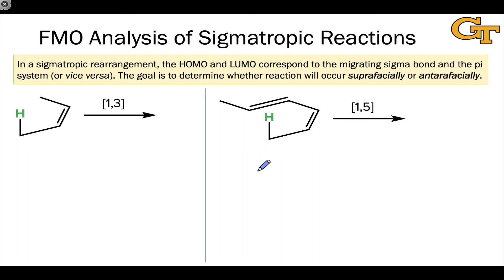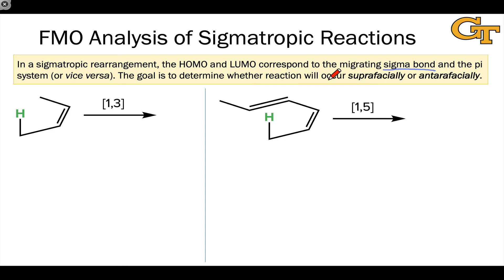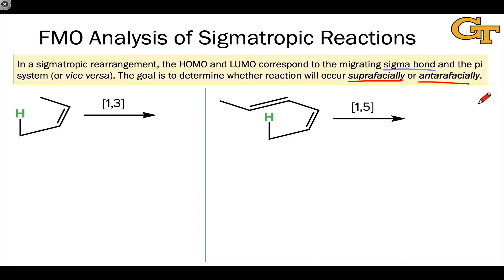To analyze sigmatropic reactions, we again take a HOMO-LUMO approach to the thermal case, using the sigma bond's HOMO alongside the pi system's LUMO — it does not matter which complementary frontier orbital we use. Our goal here is not so much to determine allowed or forbidden, but to determine how the group needs to migrate across the pi system: whether it can move directly across staying on the same face — that's called superfacial migration — or whether it needs to cross over to the other side, called antarafacial migration.